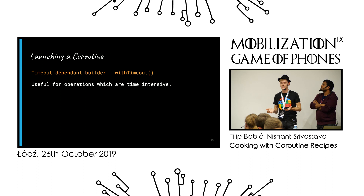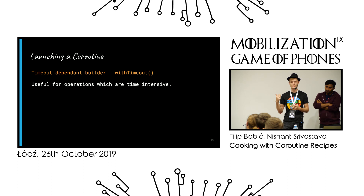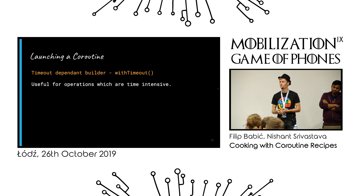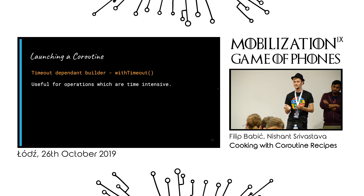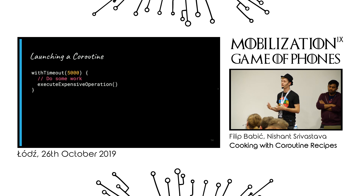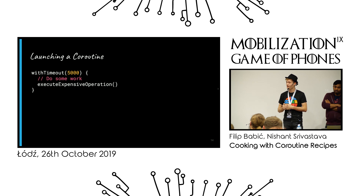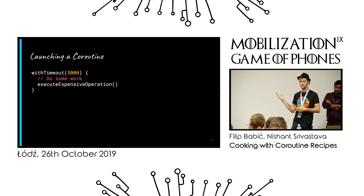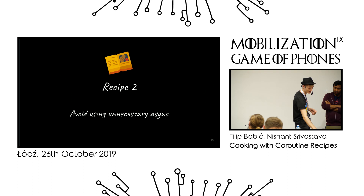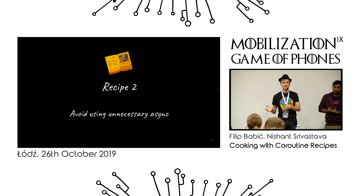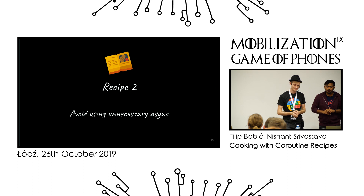The last builder we want to cover is withTimeout. If the timeout finishes but the coroutine doesn't, you'll get a TimeoutCancellationException and the coroutine will be cancelled. It's useful for time-intensive work. You call withTimeout with 5000 milliseconds, do some expensive work, and if everything completes within five seconds that's fine — if not, it cancels the coroutine and you handle the exception. One thing about async is that you can use it in many different ways.